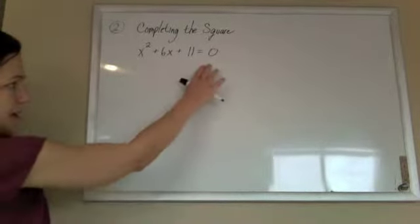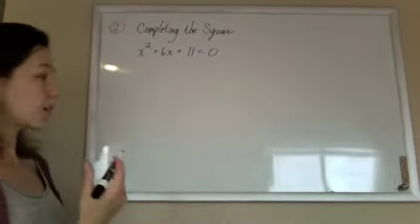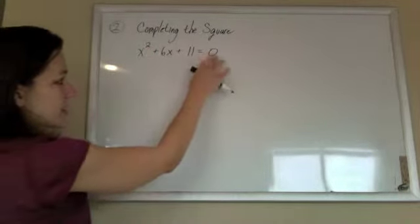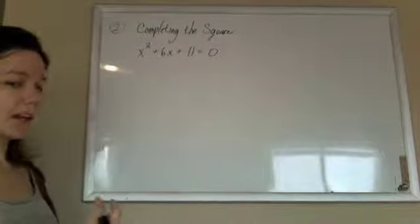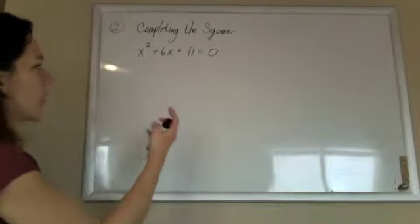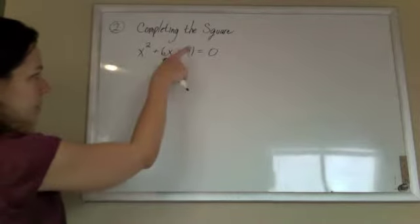Alright, so we want to try to solve this, and our first step for solving quadratics, anything with an x squared, is usually to set it equal to zero and try to factor it. But this thing is not factoring for us, so we're going to do this with completing the square.